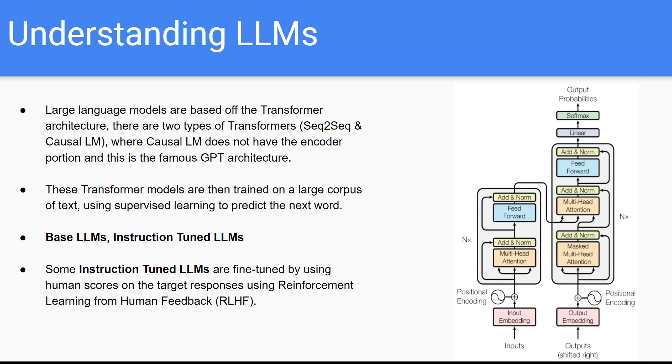So what is a large language model? Large language models are based off the transformer architecture. This is a type of neural network that was invented in 2017 to advance our capabilities with natural language processing, our ability to do things like summarize text and translate text.